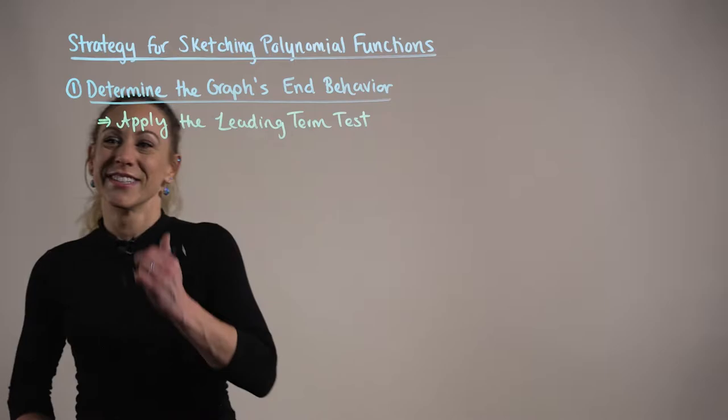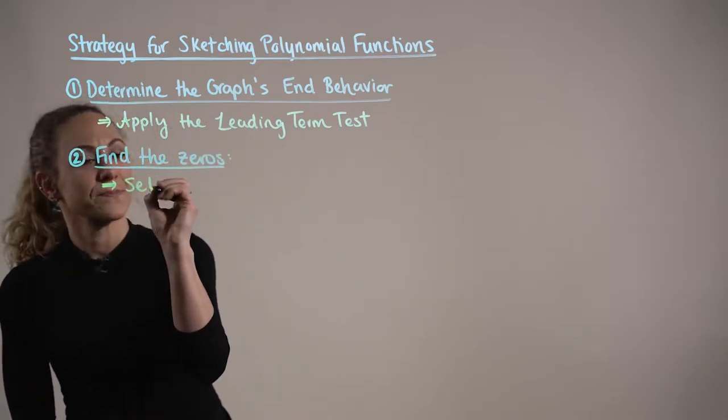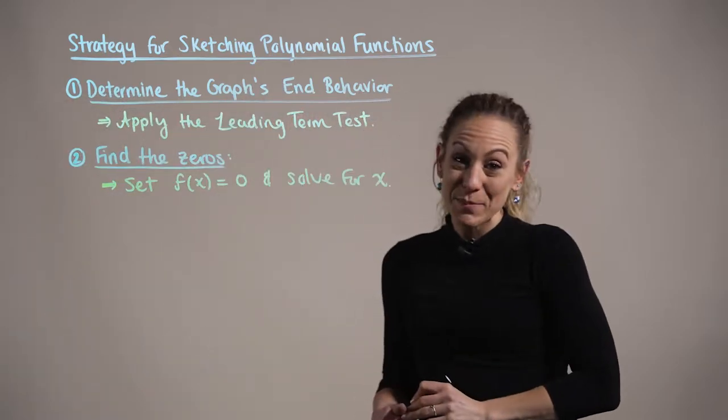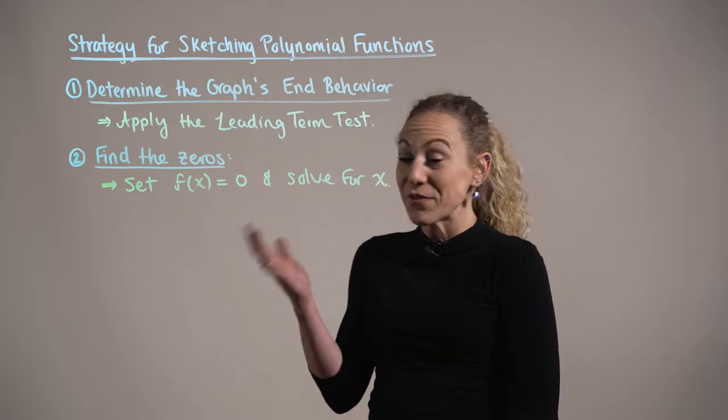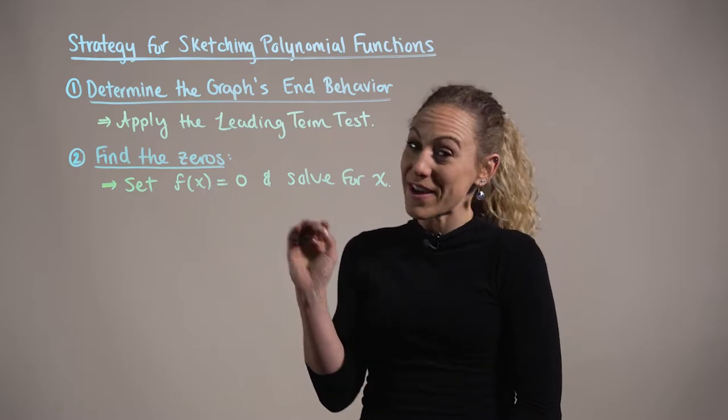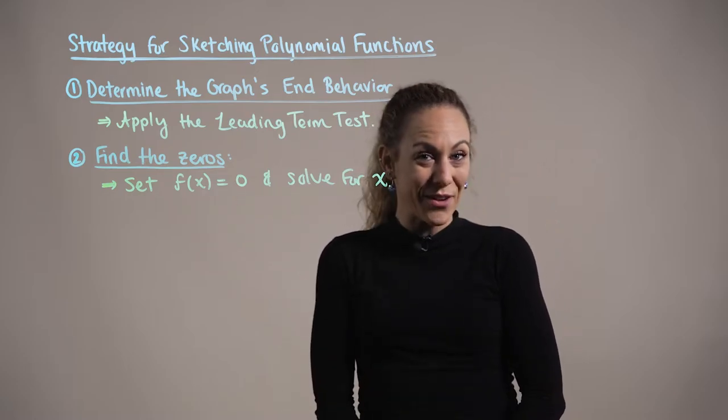Step two. In step two, we want to find the zeros of the polynomial function. To find the zeros, we simply set F(x) equal to zero and then solve for x.